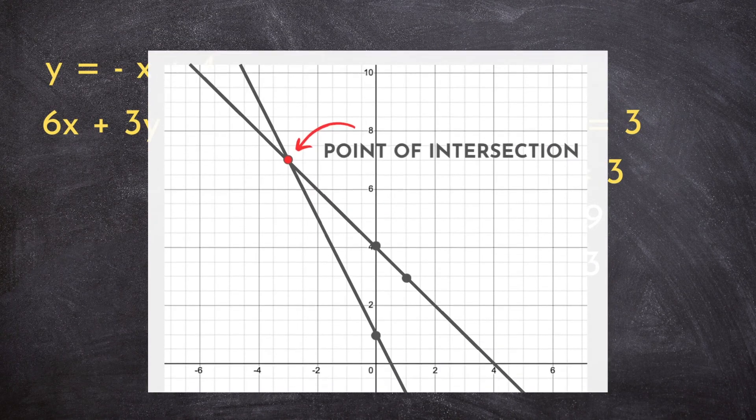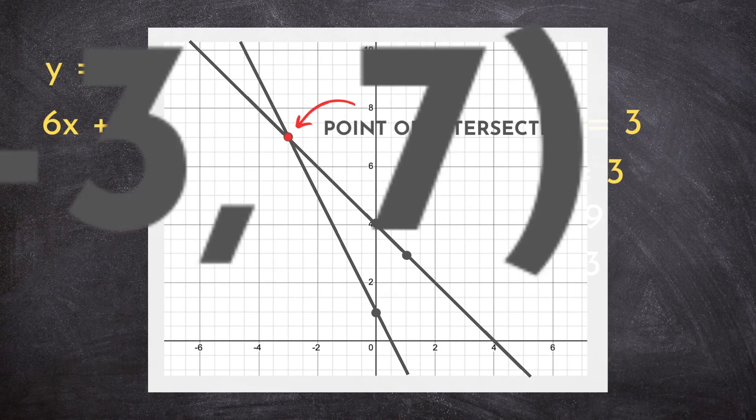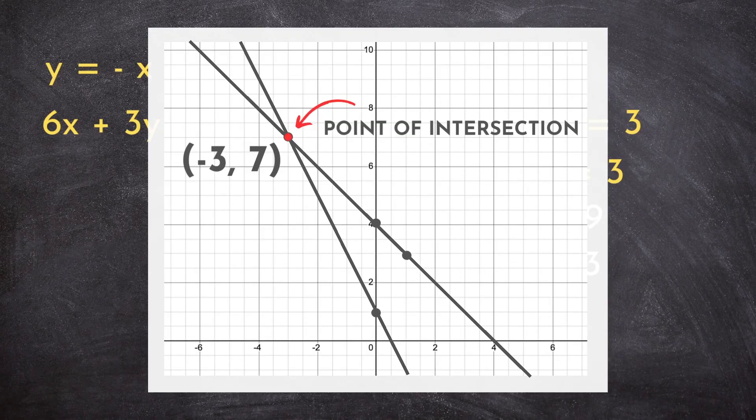So as it turns out, negative 3, 7 is the point that falls on both lines. So negative 3, 7 is our point of intersection.